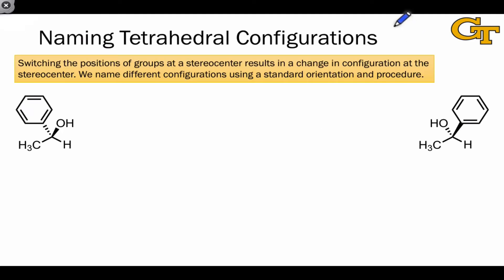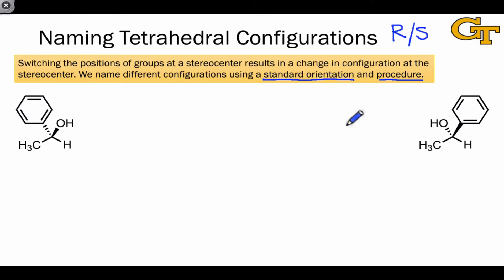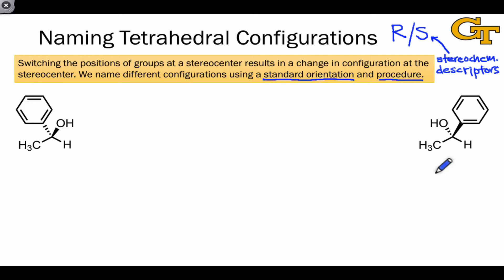To name tetrahedral configurations we make use of the so-called RS system. The big idea here is to use a standard procedure to prioritize groups around the stereocenter, then place the molecule in a standard orientation and use conventions to apply the R or S label. These are referred to in a more formal sense as stereochemical descriptors or configurational descriptors, since they describe the configuration at a stereocenter.